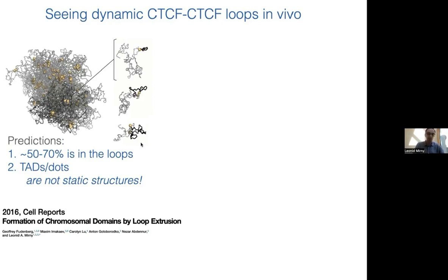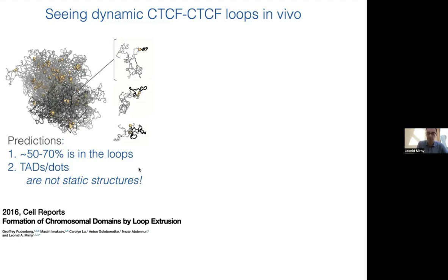This prediction was tested by Jan-Michael Peters' lab, and I encourage you to read this bioRxiv paper, which shows that all observations of cohesin loaded at the promoter result from a bad antibody. So that gives an overview of what else could stop loop extrusion. Another question is: what's the lifetime of a loop? Extruded loops are constantly changing, constantly growing. In our 2016 paper proposing loop extrusion as a mechanism of chromosome folding in interphase, we argued these loops are very transient.